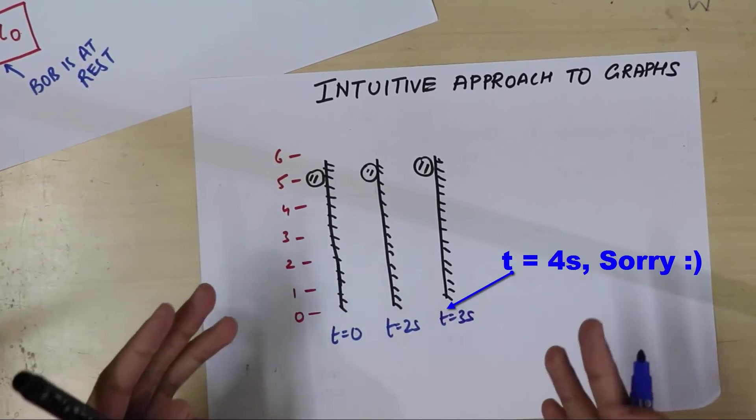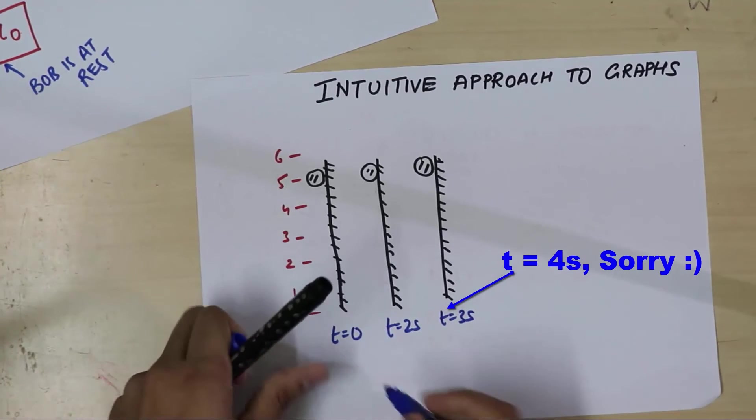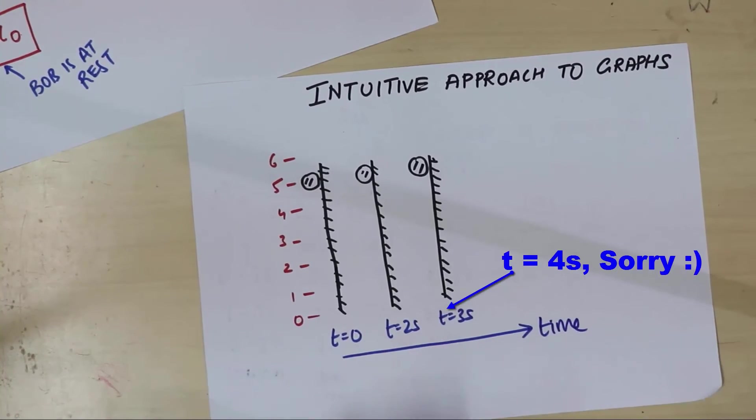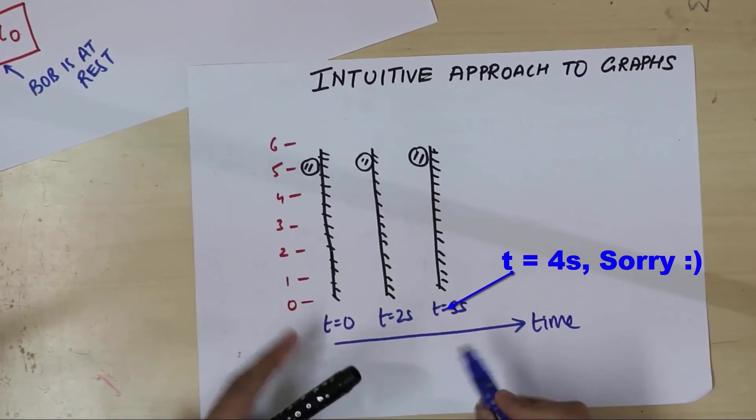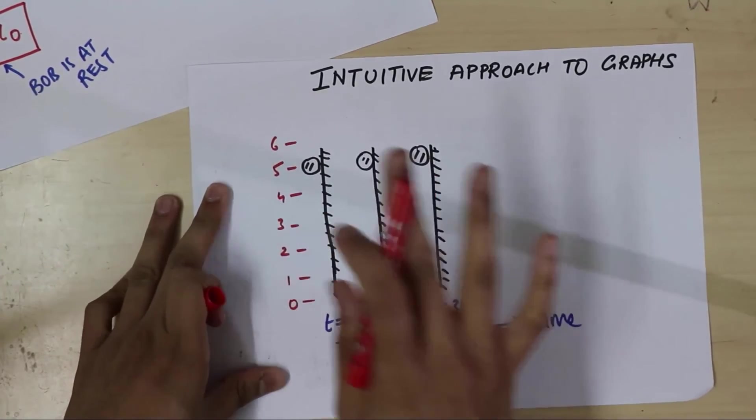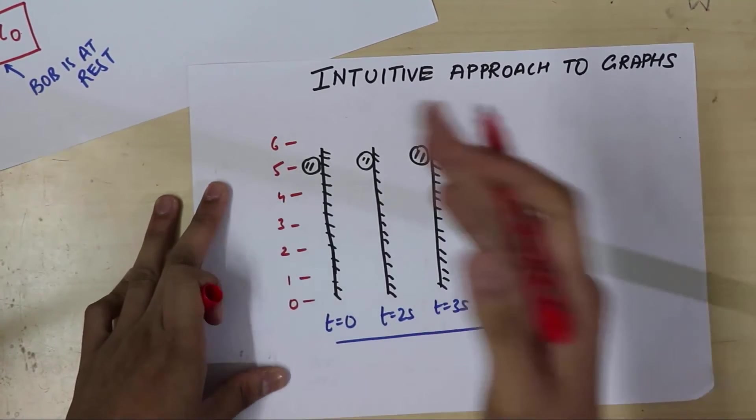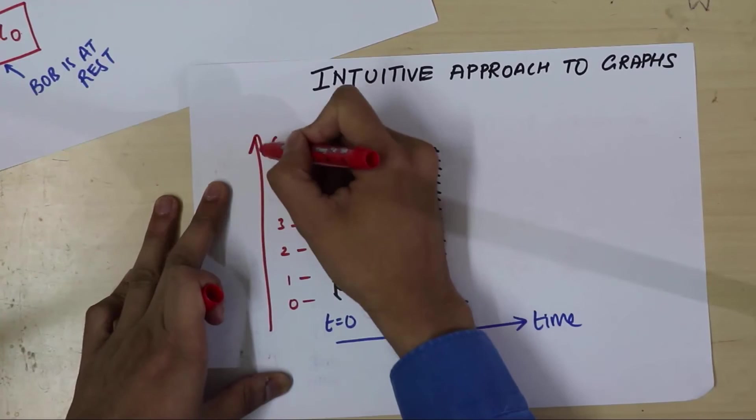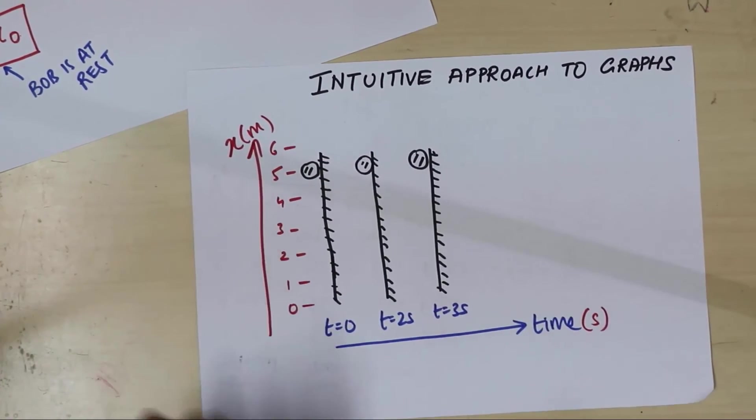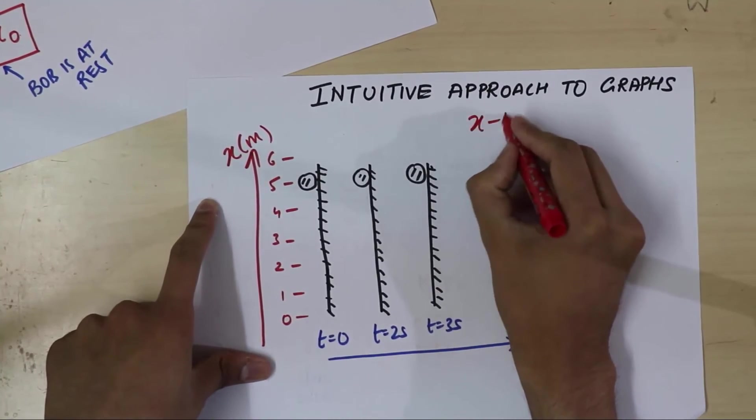Tada! We have drawn our first graph intuitively. So what we have done, just try to see what we have done. We have taken the horizontal axis and we have called that as our time. This is the time axis. So we plot time over here. And remember, Bob is allowed to move. He's not moving in this situation, but he's allowed to move here. So this vertical represents the one-dimensional world of Bob. So we have taken the vertical as x. This is in meters, and this is in seconds. So this graph is what we call an x-t graph. This is the position time graph.